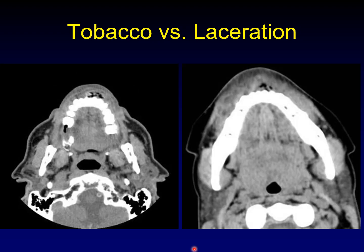One of these patients has a laceration of the lip, and the other patient has chewing tobacco tucked inside their lip. This is a laceration, and that is chewing tobacco. Maybe the infiltrative hematoma around it would have given you a clue in this case.